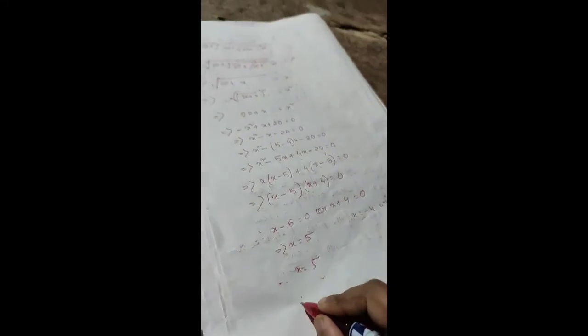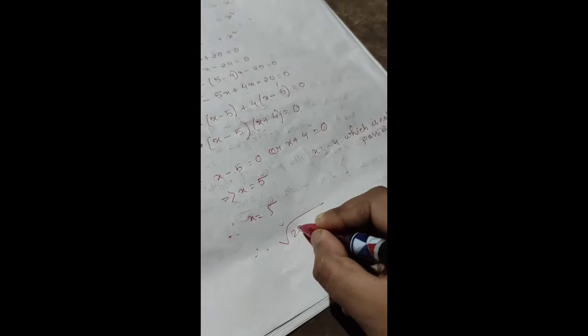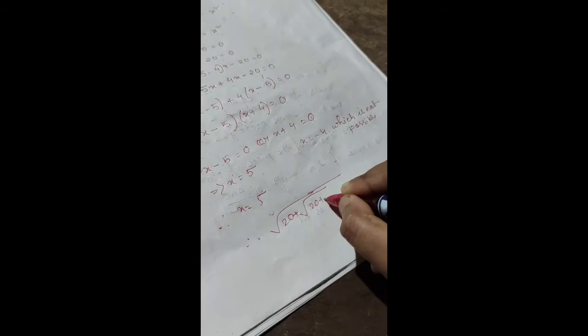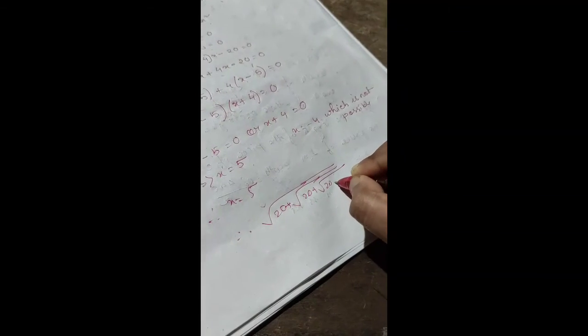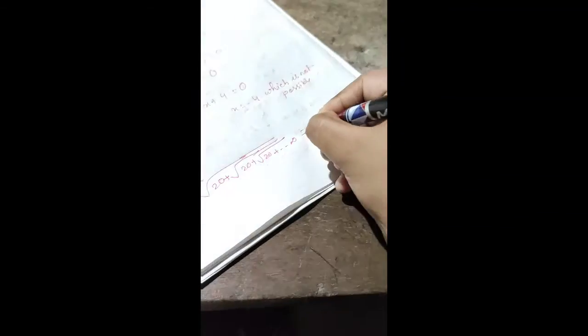Similarly, √(20 + √(20 + √(20 + ...))) equals 5.